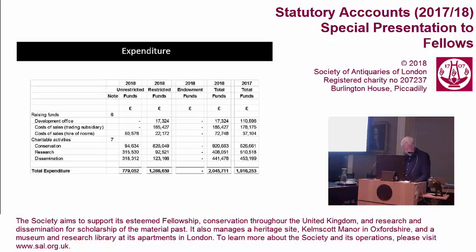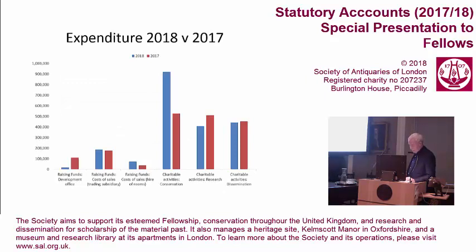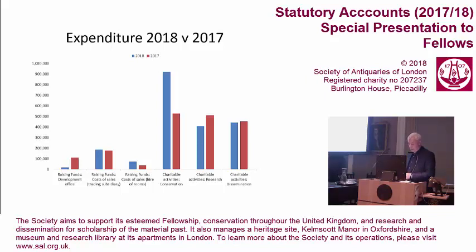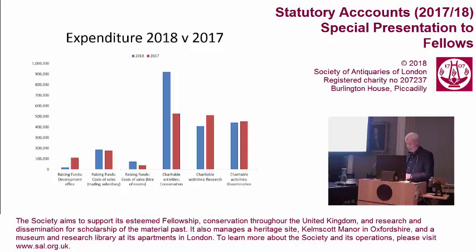To show the expenditure in a more easily understandable form under different categories again: red is 2017, blue is 2018. The higher costs of charitable activities in 2018 — particularly conservation — are because the expenditure includes the CalScot Past, Present and Future spend of £438,760, which I mentioned earlier.